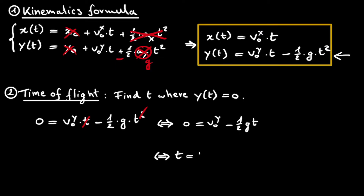We can rewrite this equation to isolate t. We get that t, which we can now write as capital T, the time of flight, is equal to 2 times the initial velocity in the y direction, divided by the gravitational acceleration g.